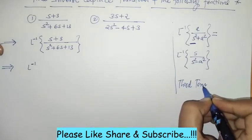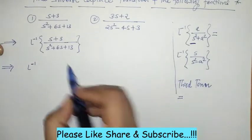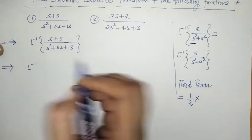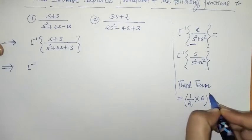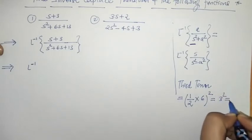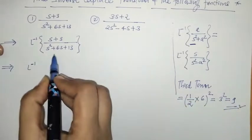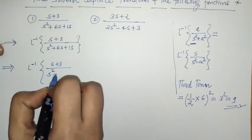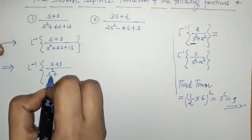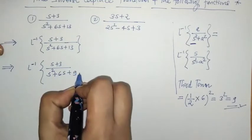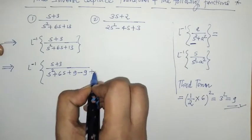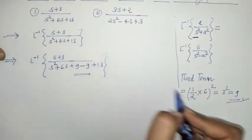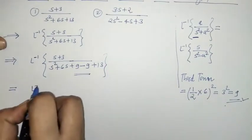For making a perfect square, we calculate the third term using the formula: (1/2 × coefficient of s)². Here the coefficient is 6, so we get 3² = 9. That means we adjust by adding and subtracting 9: the denominator becomes s² + 6s + 9 − 9 + 13, which is the adjusted form.